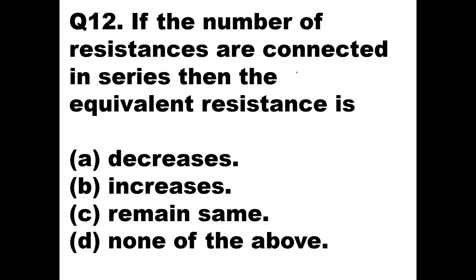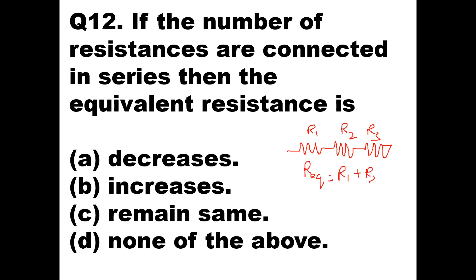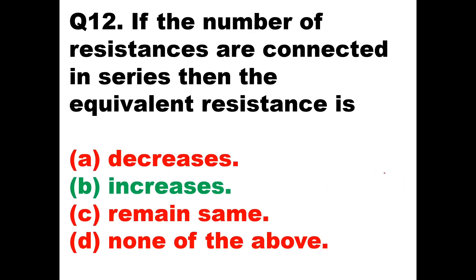Question 12: If a number of resistances are connected in series, then the equivalent resistance will be — decreased, increased, or remains the same? In a series connection with R1, R2, R3, the equivalent resistance is the sum of all resistances, so it obviously increases. Option B — the equivalent resistance increases — is the right answer.